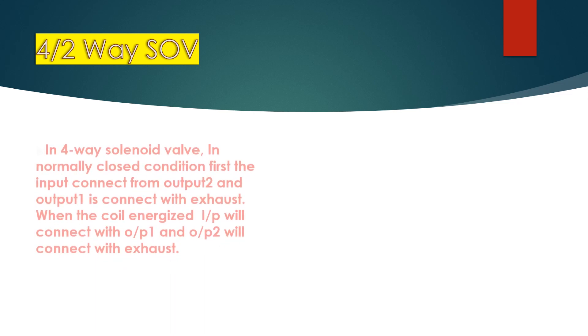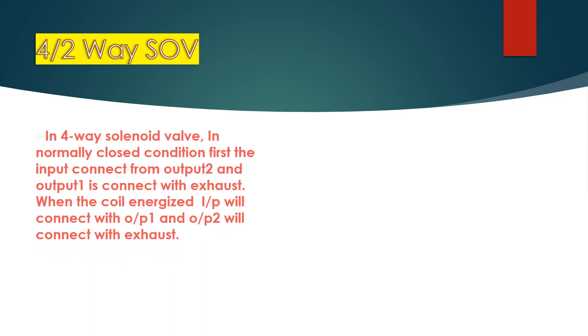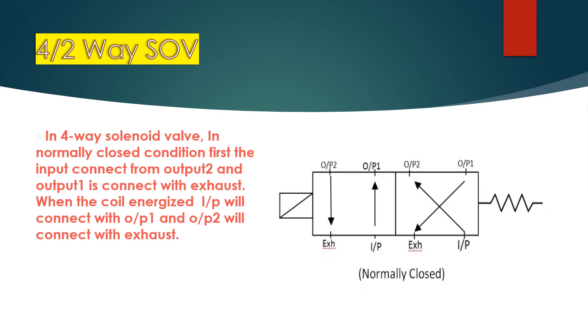Next one is 4 by 2 way solenoid valve. In 4-way solenoid valve, in normally closed condition, first the input connects from output 2, and output 1 is connected with exhaust. When the coil is energized, input will connect with output 1.